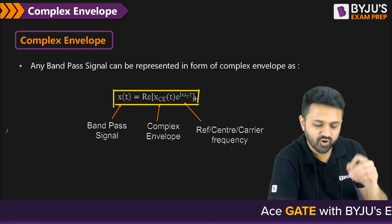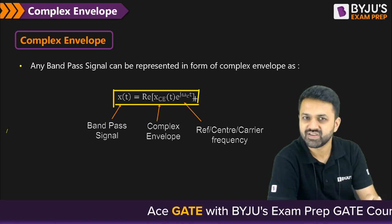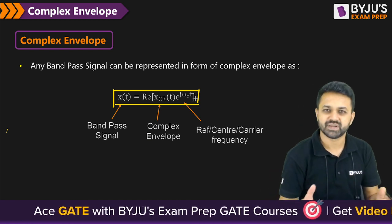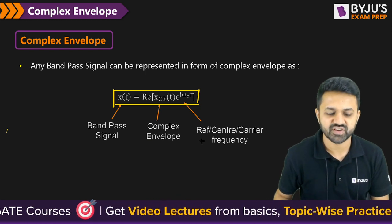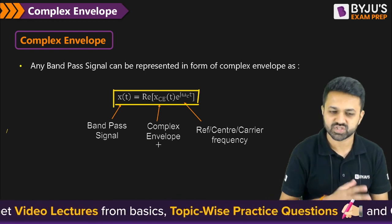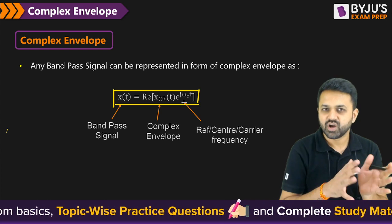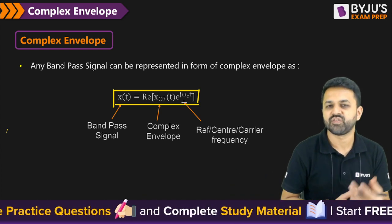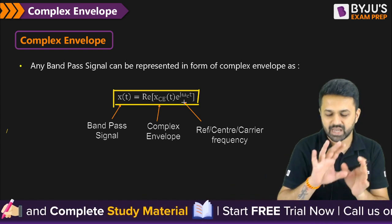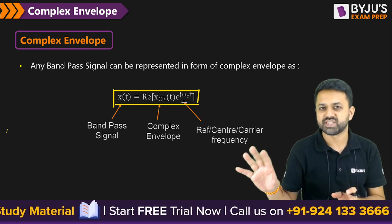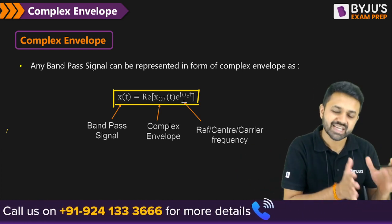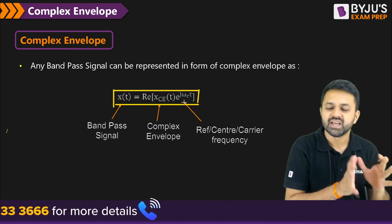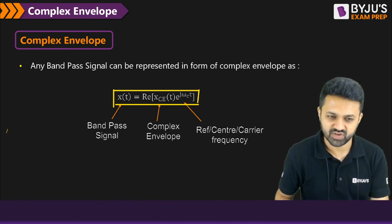This ωc can be the frequency of carrier. It can be the center frequency of any signal because a bandpass signal always has the center frequency. And it can also be the reference frequency, whatever given in the question. Just you write the whole expression in terms of a complex term and separate your complex exponential, which is your reference signal, reference frequency.